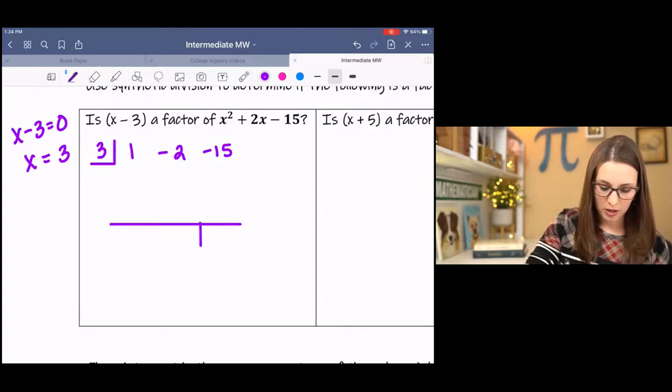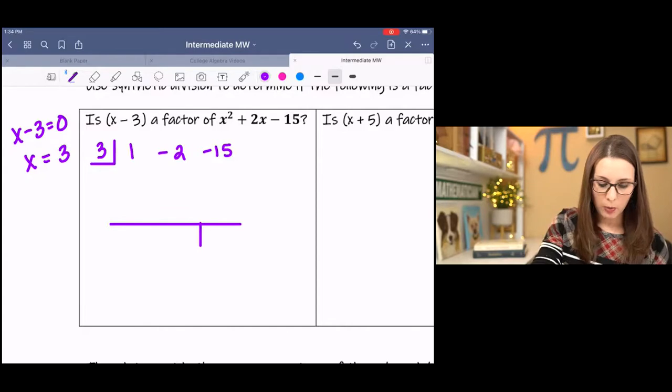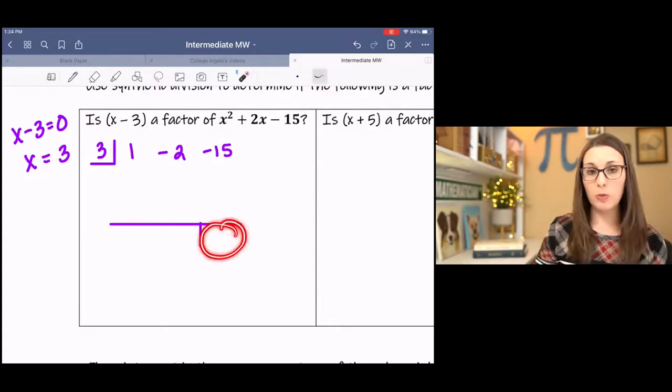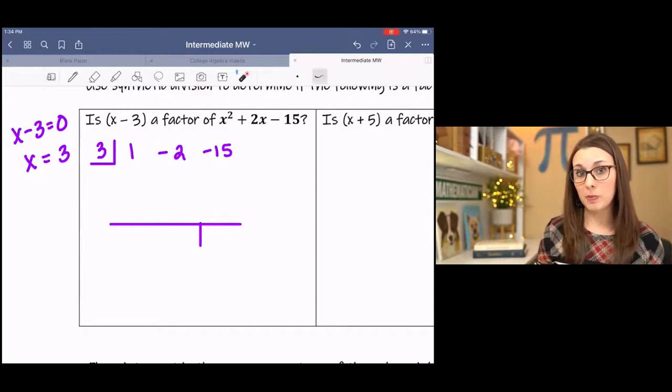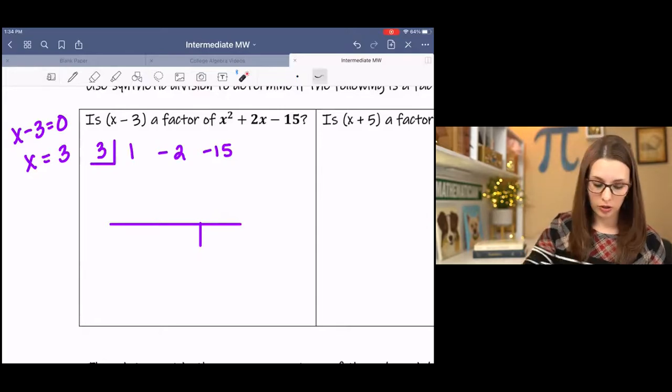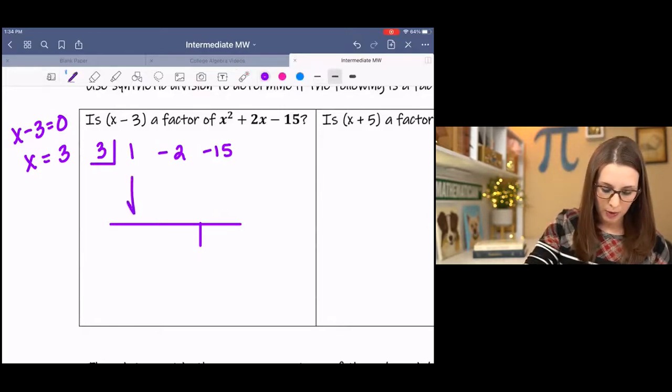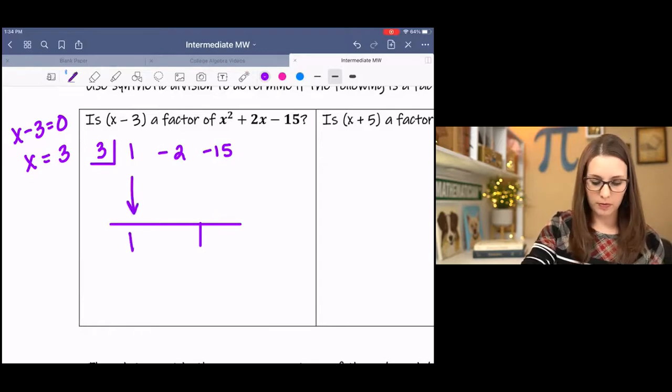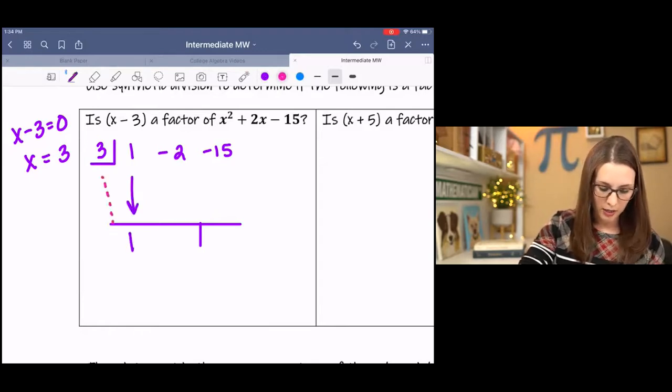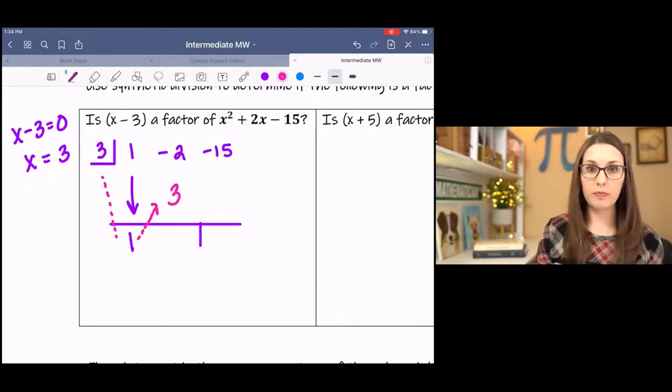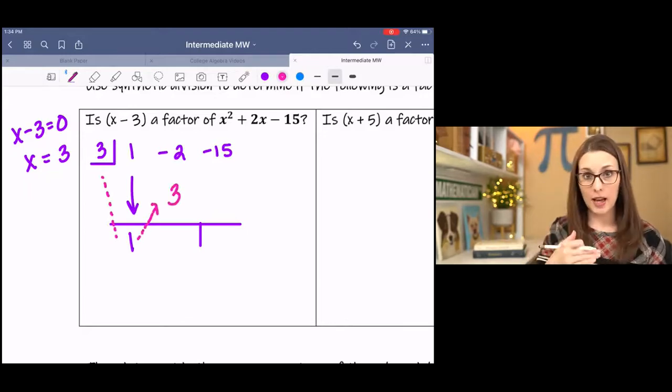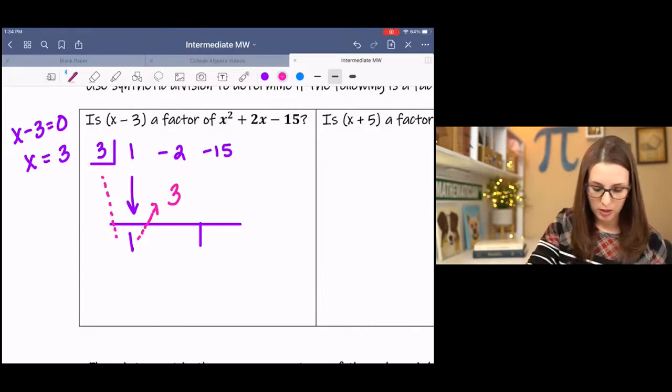And I have this line down here. I have another line here. And what this is setting up is this will be my remainder. If the remainder is 0, then x minus 3 is a factor. I'm going to bring down my first coefficient. And then I'm multiplying down. 3 times 1 is 3. Then add down. Negative 2 plus 3 is 1.